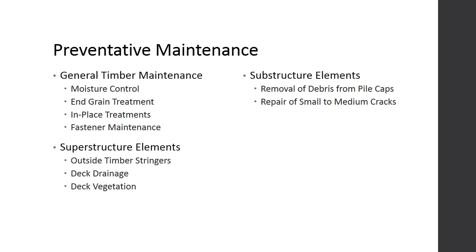Timber bridge preventative maintenance can be completed in many ways. Timber construction is generally benefited by controlling exposure to prolonged moisture conditions and treating the end grain of exposed elements. In-place treatments exist that inhibit decay. Fastener maintenance is key to prolonging the service life of a bridge. With respect to the superstructure, particular attention should be paid to outside stringers and decks where exposure to moisture is most likely. With respect to the substructure, debris removal and small to medium crack repair are also important preventative maintenance practices.